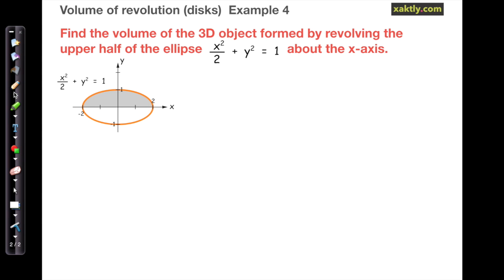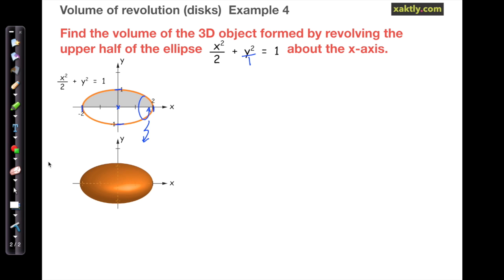Here's a nice picture of that ellipse. We can draw out the major axis of 2 and the minor axis of 1. The idea is to revolve this around the x-axis to make a figure. And here's a nicer looking version of this three-dimensional figure.